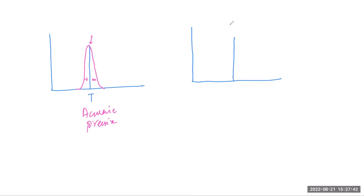In the second graph example, the true value is at the peak, so the data is accurate. But the curve is wide — the measured values are spread far from each other — so it is not precise.